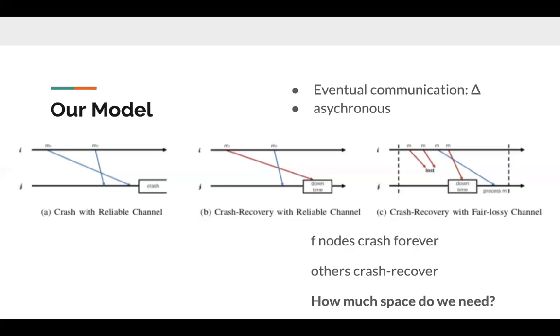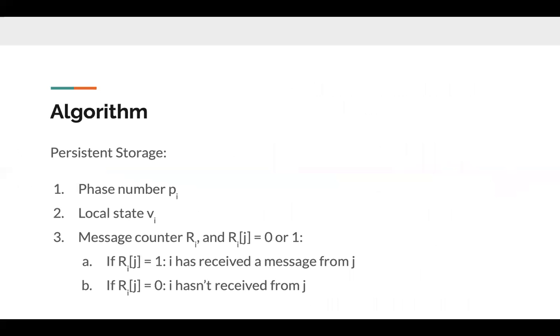Besides, we want to find out how much storage space we need. As a result, we devised a novel algorithm that only stores three things. We will present a simple algorithm that solves approximate consensus under the condition n greater or equal to 2f plus 1, under our crash recovery model with fair lossy links.